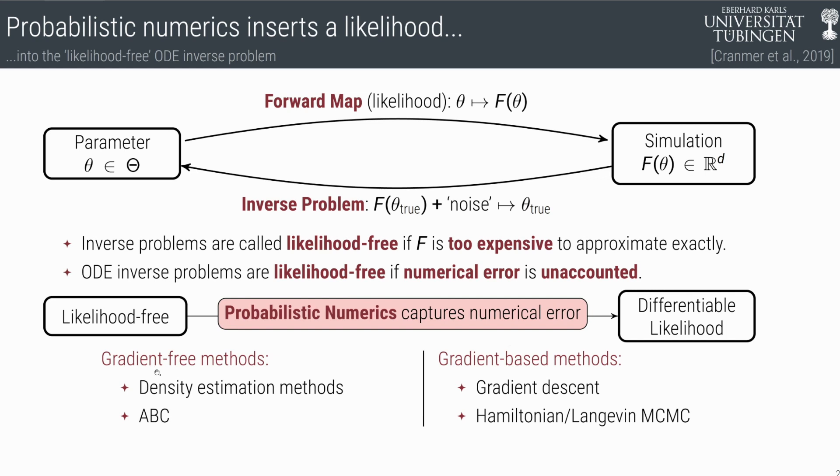This is a big practical benefit. Because now we can go from density estimation methods, or ABC, which are very generic, very slow methods, to fast methods, like Hamiltonian, Langevin, MCMC, or just plain old gradient descent, if you want to keep it simple.